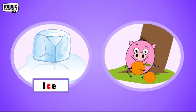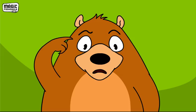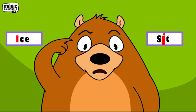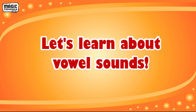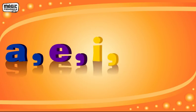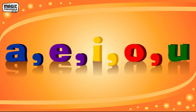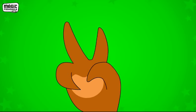ICE. SITS. If I read 'I' in ice, why does 'I' read differently than in sit? Let's learn about vowel sounds: A, E, I, O, U. They are vowels. Each vowel makes two sounds — a long vowel sound and a short vowel sound.